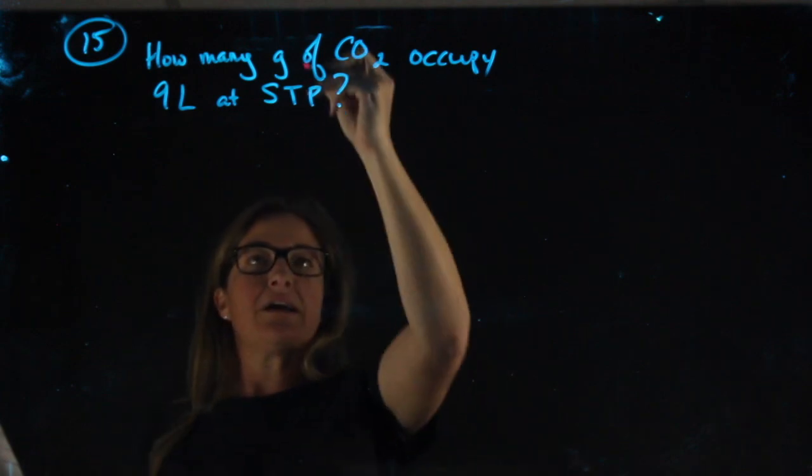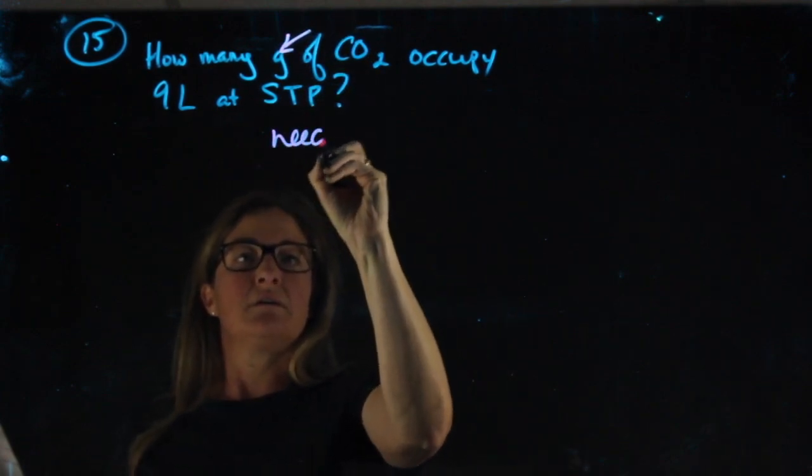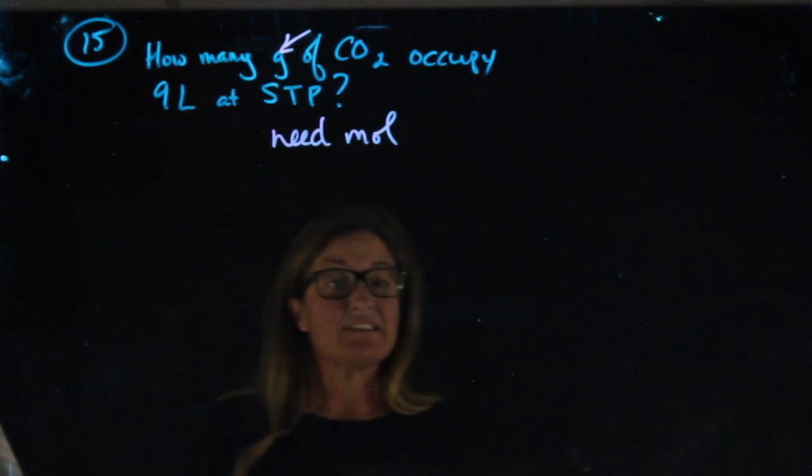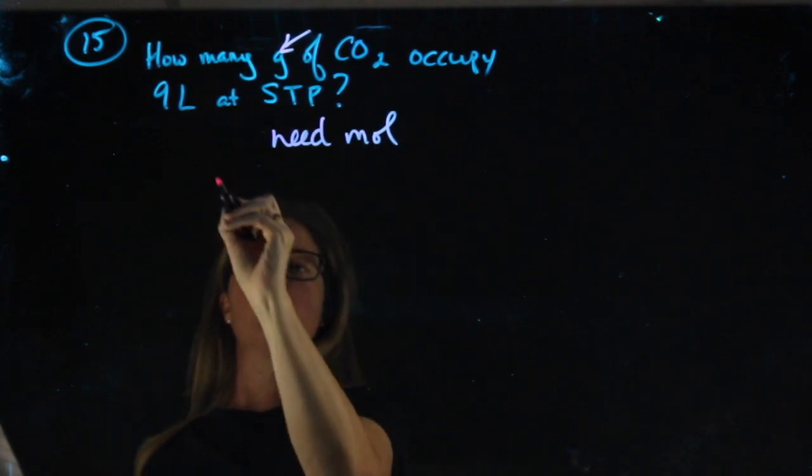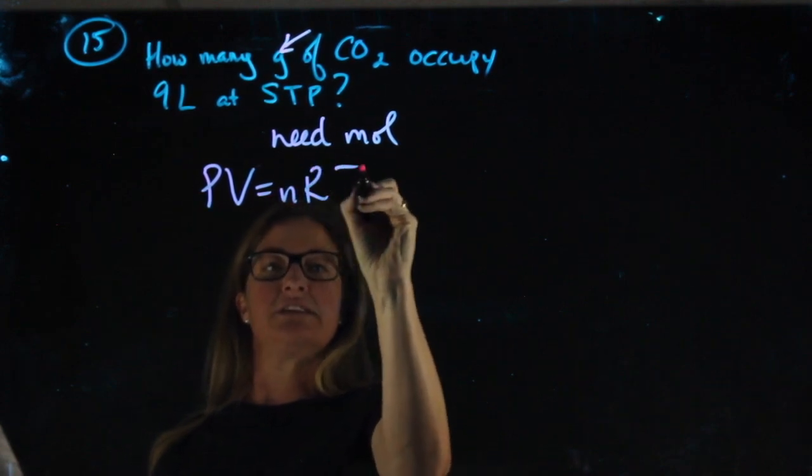If I want grams, I need moles. Within gases, the equation from which we get moles is PV equals nRT.